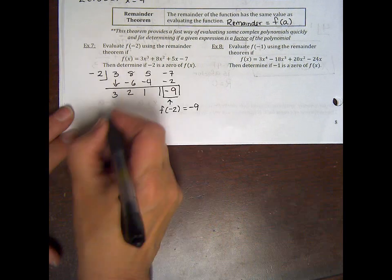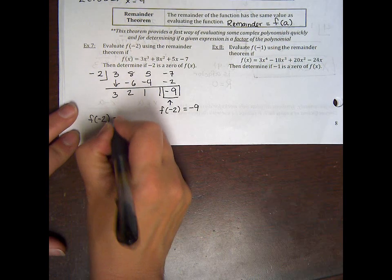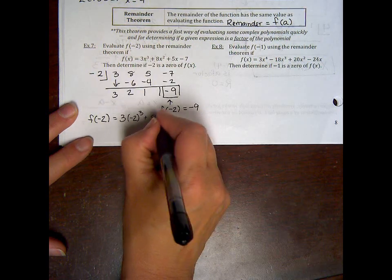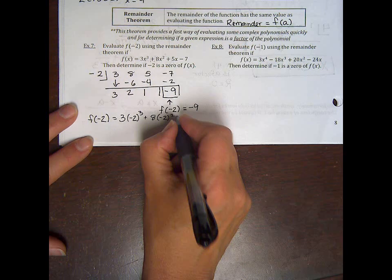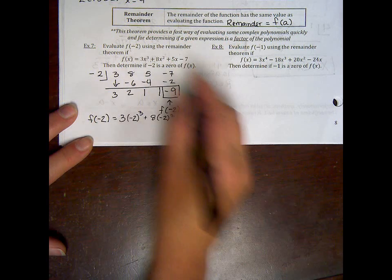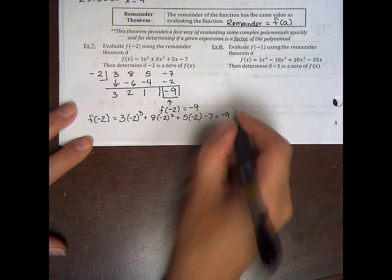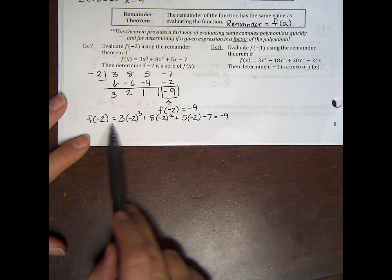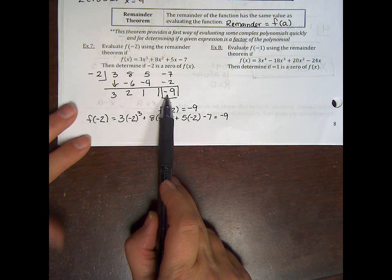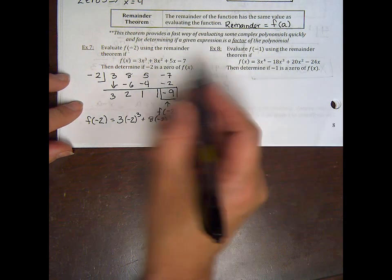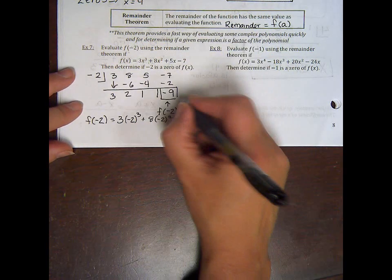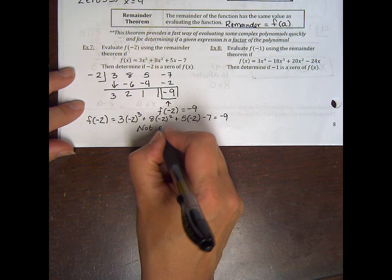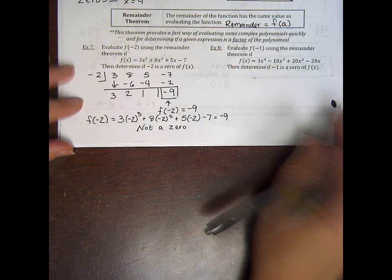This is the remainder. So that means that f of negative 2 is equal to negative 9. I would have gotten that same answer if I had taken the negative 2 and done 3 to the negative 2 cubed plus 8 negative 2 squared plus 5 times negative 2 minus 7. But, I mean, that's not terribly hard, but I kind of think it was a lot easier just to synthetically divide. Sometimes it's going to be easier to do it this way. Sometimes easier to divide. It just depends on the problem. So the second question here was determine if negative 2 is a zero. It's not a zero unless you plug it in and you get 0. So it's not a zero because the remainder was not 0.